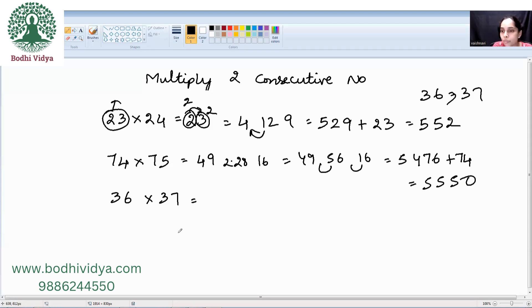The lowest number is 36. So, I need to make 36 square. So, 3 square is what? 9. 6 square is what? 36. 2 3s are is what? 6 6 6 is 36. Now, do this dodging for the intermediate result. So, it is 1 2 9 6 plus 36. Your final answer will be 1 3 3 2.